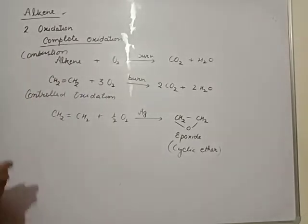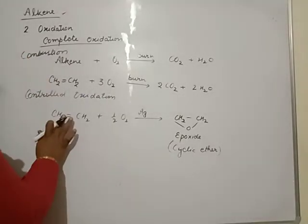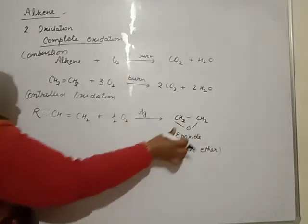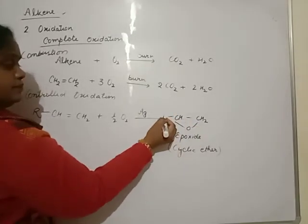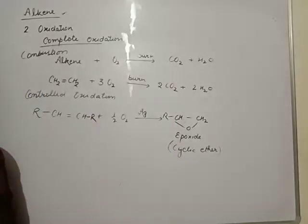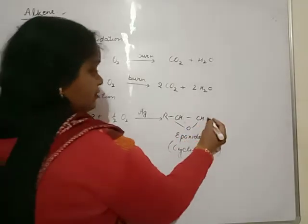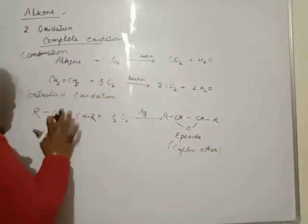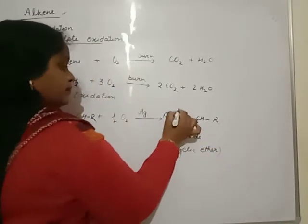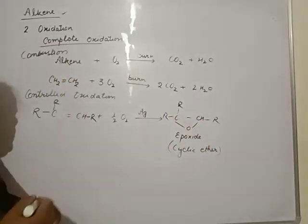If we have alkene, higher alkene, doesn't matter. If we have both side an alkyl group, that is okay. If there are two alkyl groups, then also okay. Cyclic ether will be formed in place of double bond.